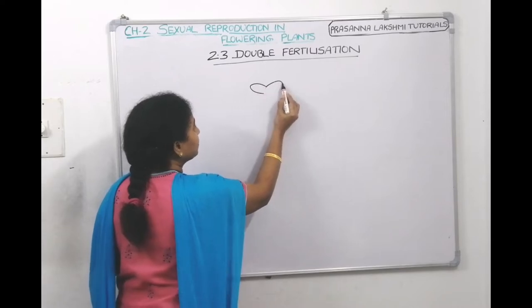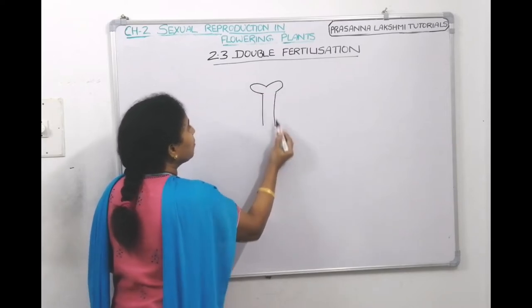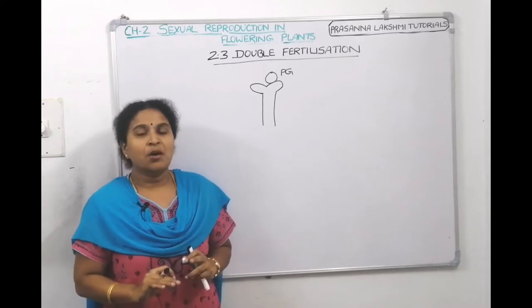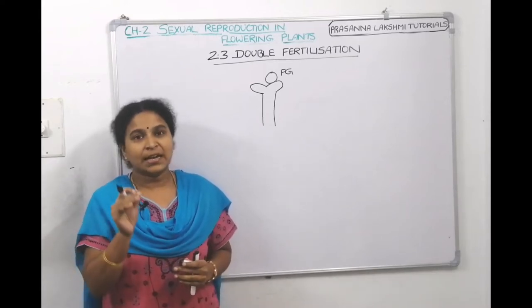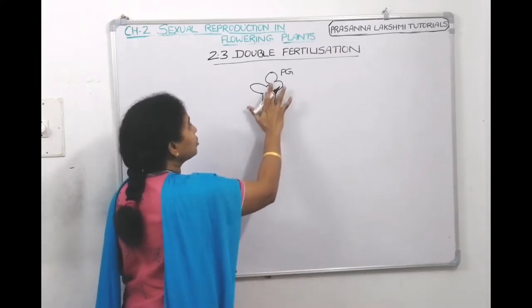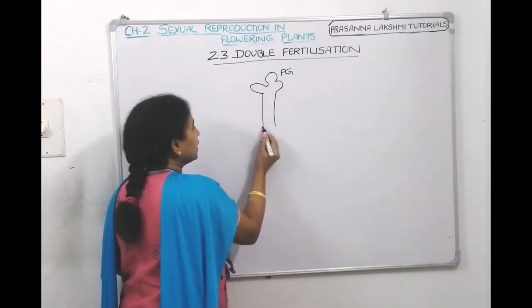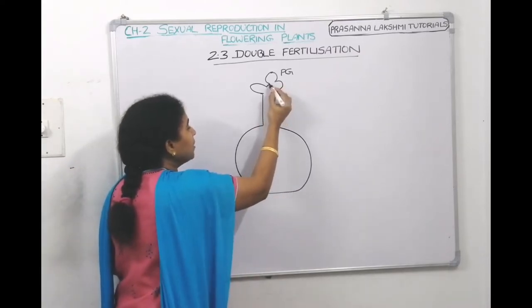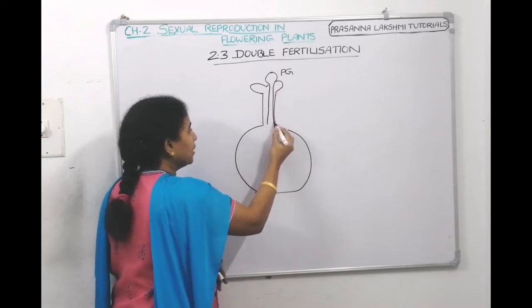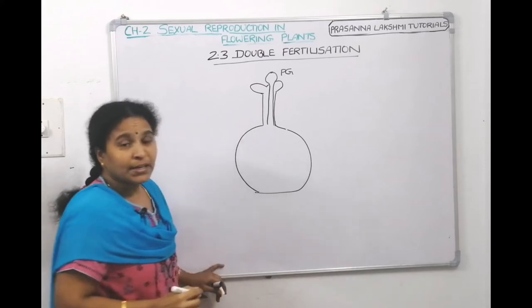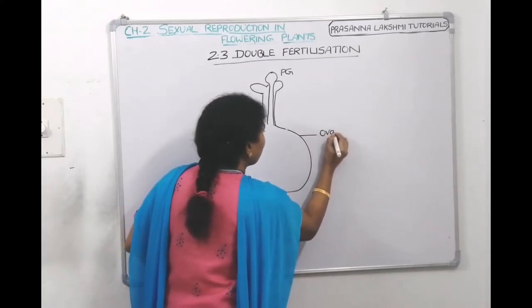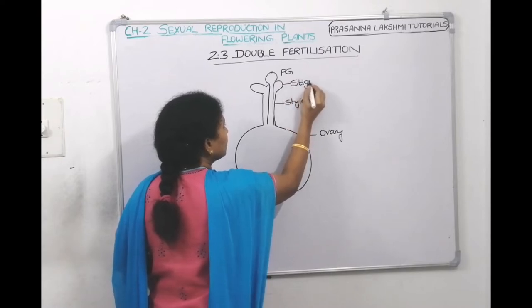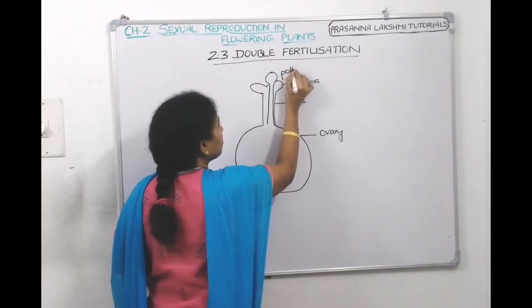When pollination happens, the pollen grain comes and lands on the stigma. A chemical dialogue starts — the pollen grain interacts with the pistil, which identifies it as a compatible pollen and gives permission to make a pollen tube. The pollen grain starts germinating and makes a pollen tube. Here we can see the pollen tube, the ovary, the style, and the landing platform called the stigma.